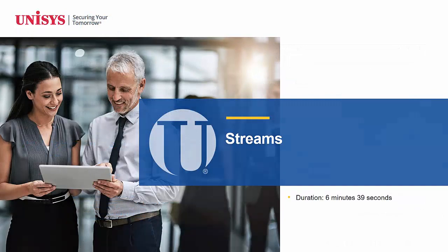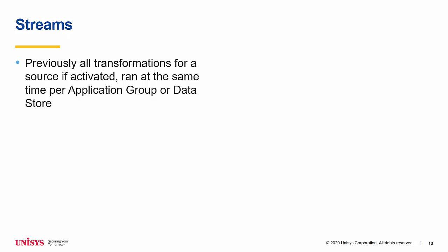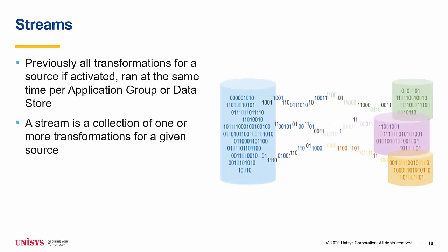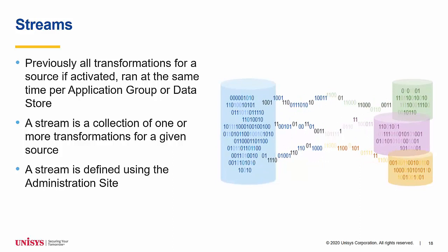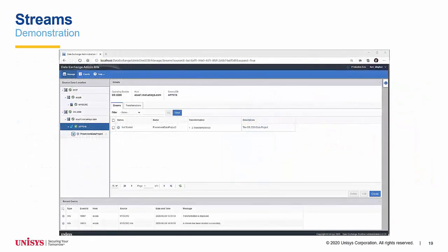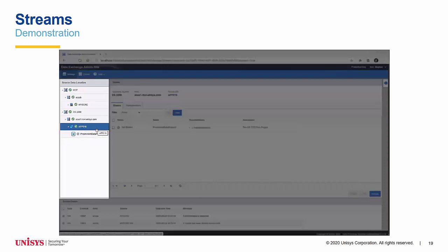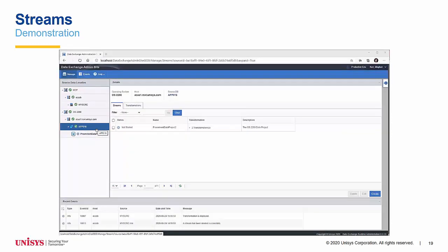Streams. Previously, all activated transformations would run at the same time for an application group if OS 2200, or a data store if an MCP or Windows source kind. Release 6.0 introduces the concept of streams. A stream is a collection of one or more transformations for a given application group for OS 2200, or for a given data store. In the administration site, create one or more streams for your data to flow within. Each stream will run independently. Streams exist as the lowest level node under your source machine in the administration site source data location pane. Before attempting to create a stream, deploy your transformations to the administration site.